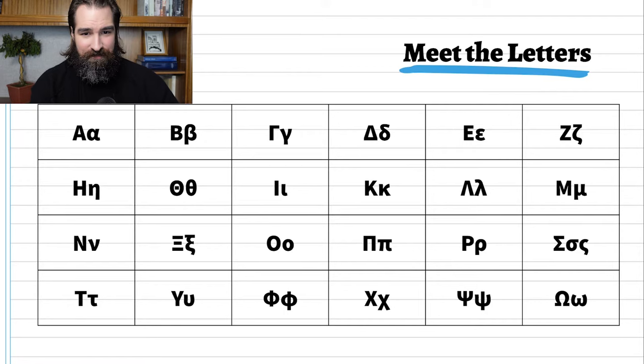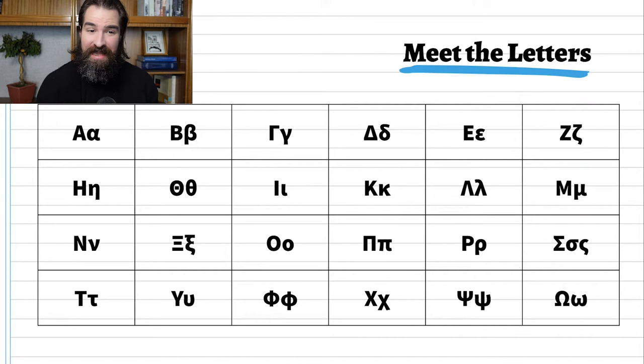Let's look at the letters — let's meet the letters. That's what we're going to do today. There are 24 Greek letters, and a lot of them look like English letters. Let me go through them.